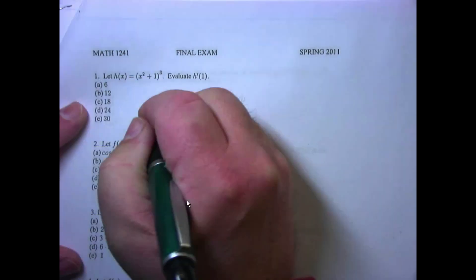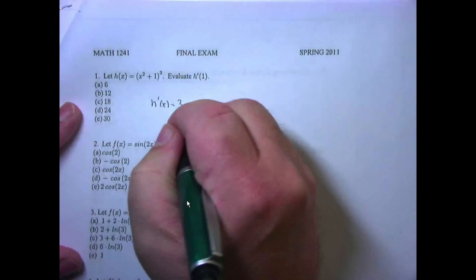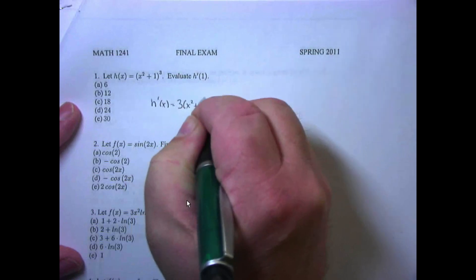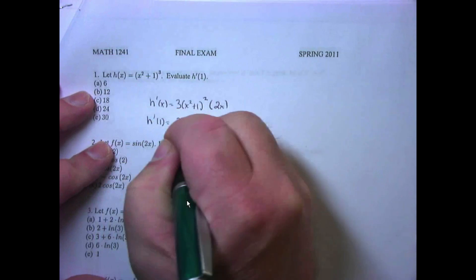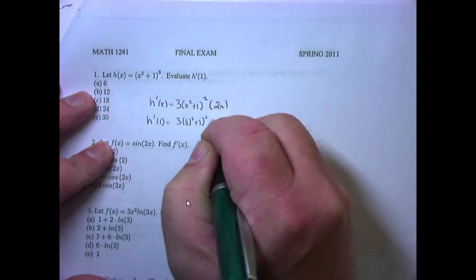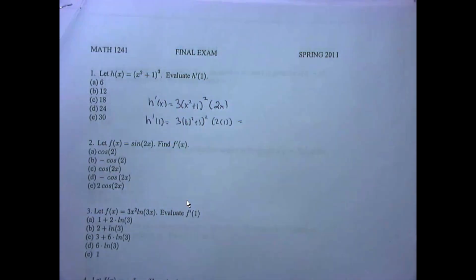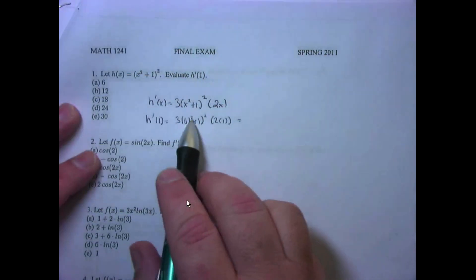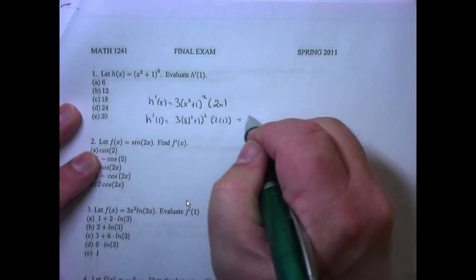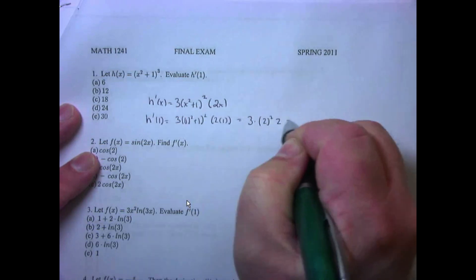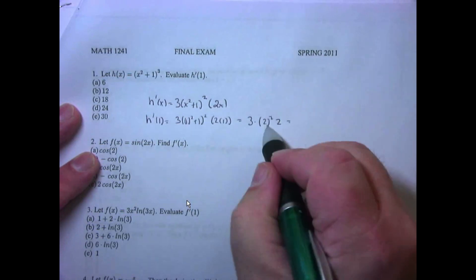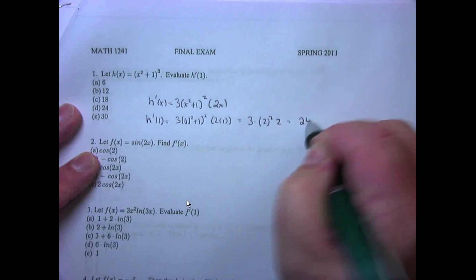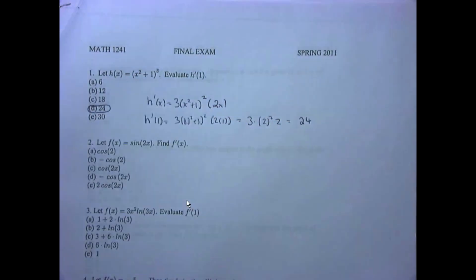h prime of x — I would use the chain rule: derivative of the outside, inside stays the same, times derivative of the inside. That gives three times x squared plus one, quantity squared, times two x. Plugging in one: three times one squared plus one, quantity squared, times two times one. Inside parentheses first: one squared is one, one plus one is two. So this becomes three times two squared times two — three times four is 12, times two is 24. The answer is D.